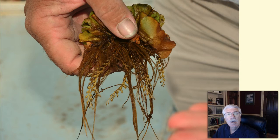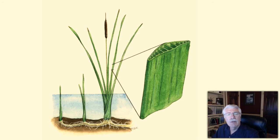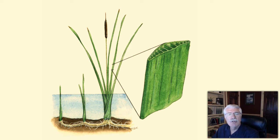The most common adaptation is large air spaces or channels running through the leaves, stems, and roots. These air channels allow an exchange of gases between the parts of the plant that remain submerged in water, such as the root, and the parts that reach above the water's surface.